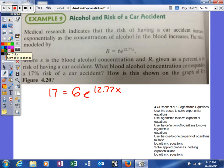Right now, x is in the exponent being multiplied by 12.77. Then we're raising e to that power and multiplying by 6. So the first thing I'm going to do is divide by 6. That will cancel over here, leaving us with 17/6 = e^(12.77x).